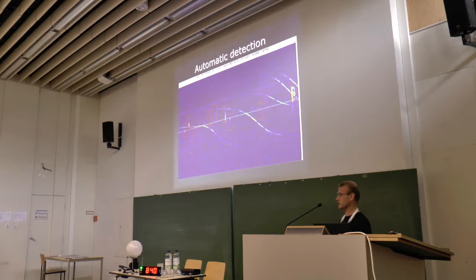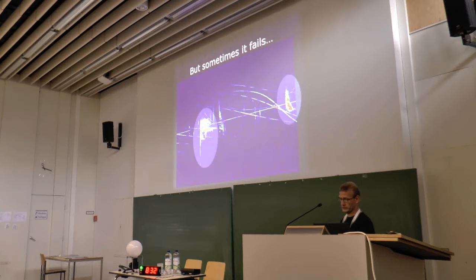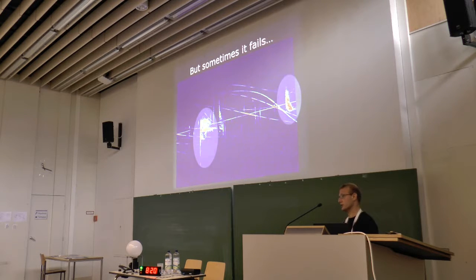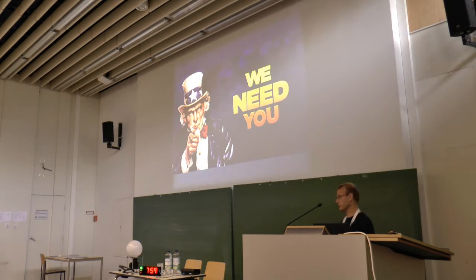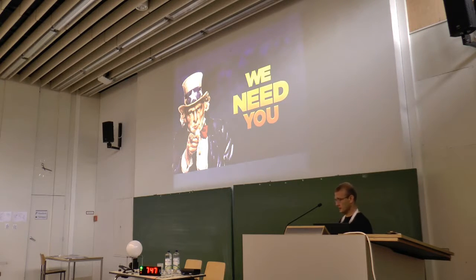The automatic detection algorithm works very well when the reflections are relatively simple and easy to detect. But sometimes it fails completely, because especially during meteor showers — the moments we are most interested in — bigger particles enter the Earth's atmosphere and cause more complex reflections. For a computer it's very difficult to detect these and to determine which parts belong together. But for the human eye it's not so difficult, and this is why we set up the Radio Meteor Zoo.